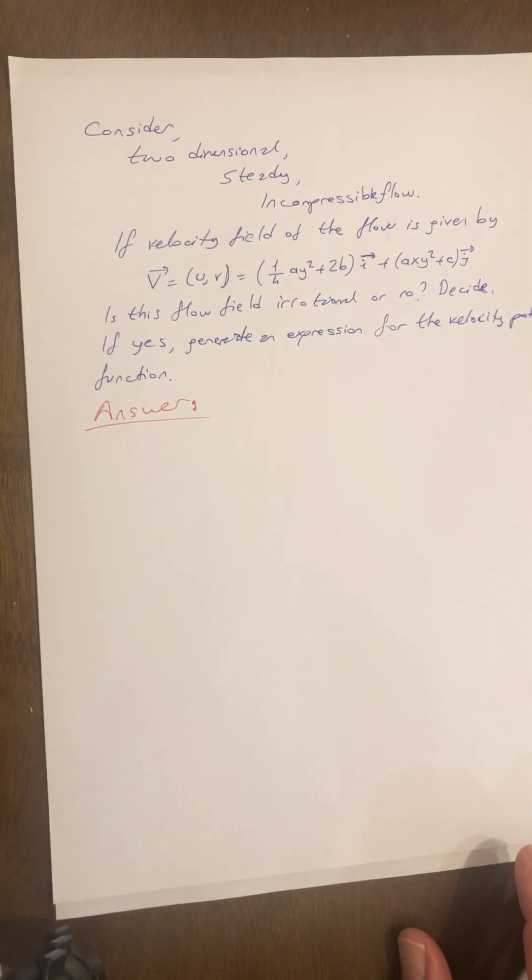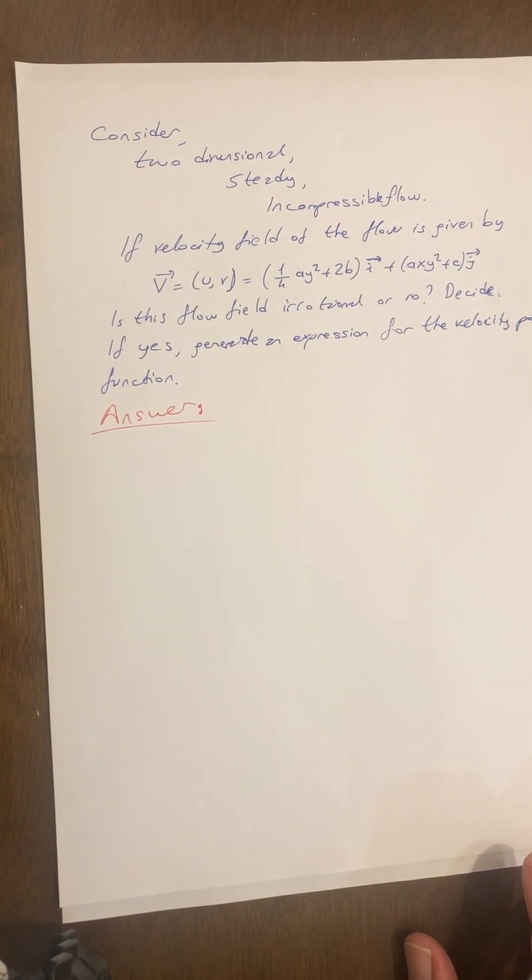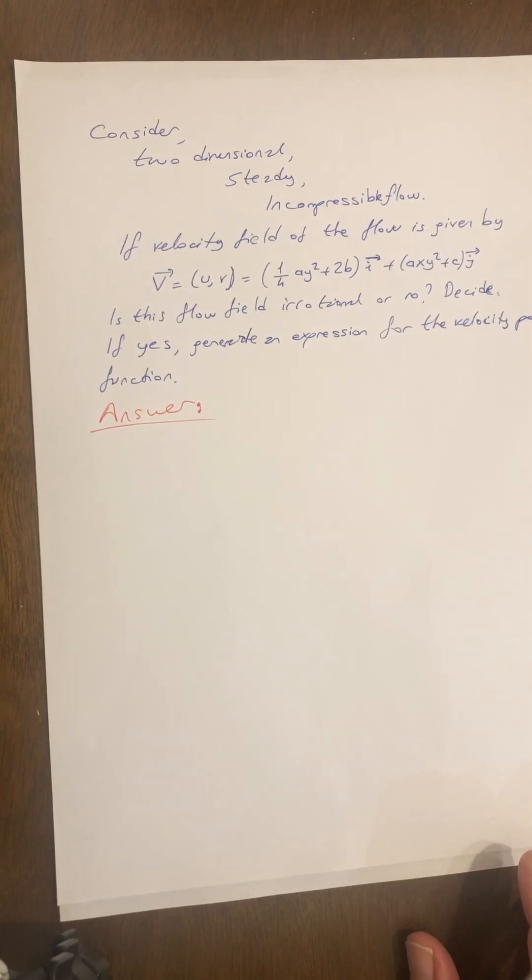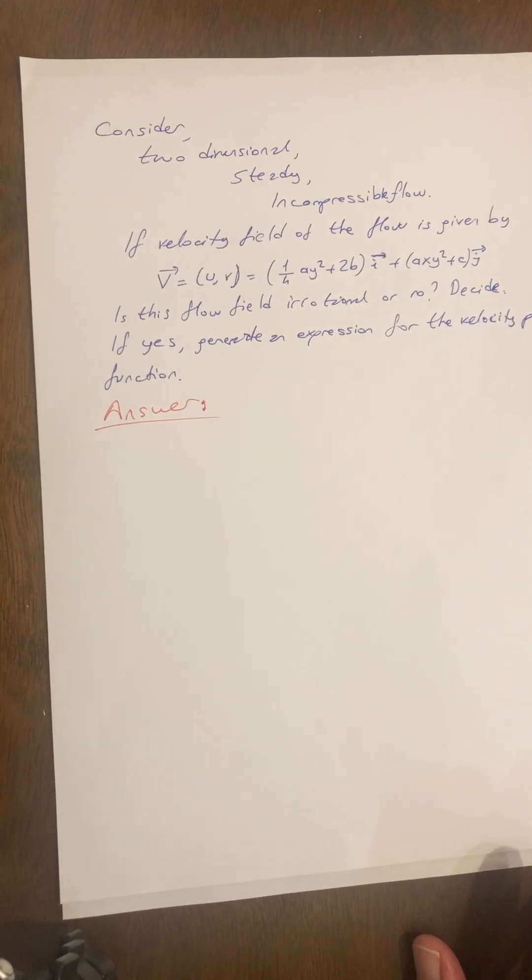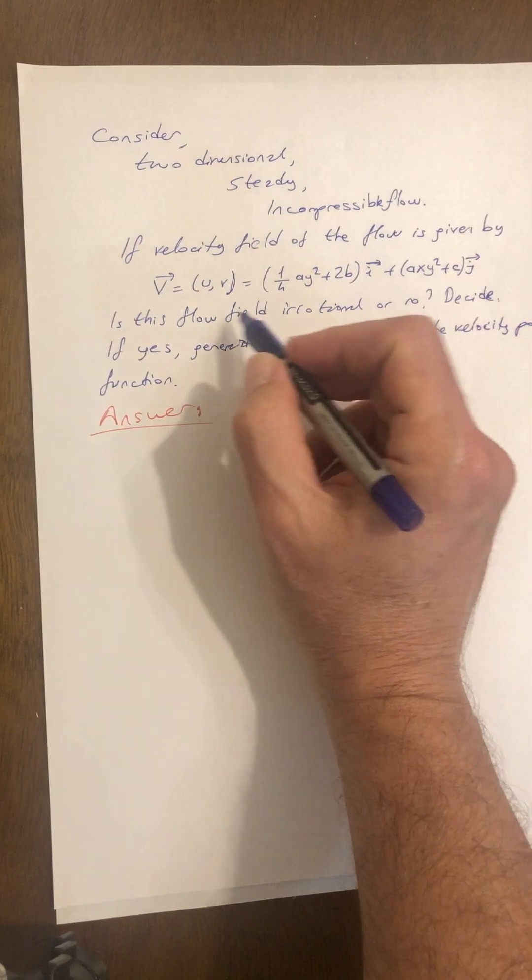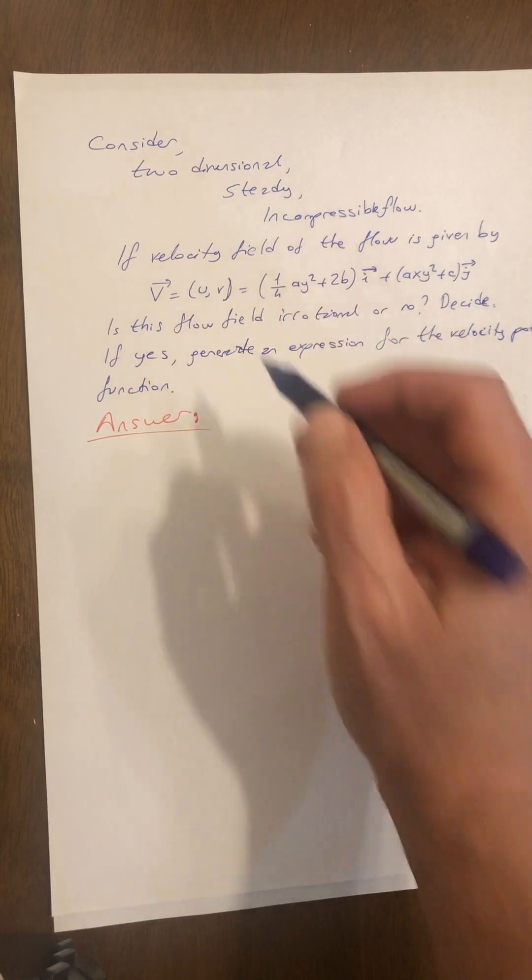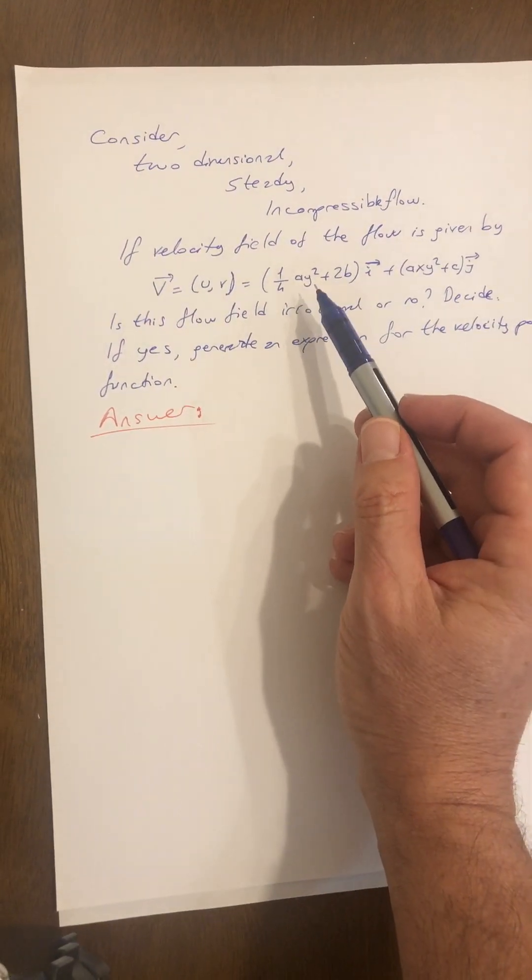In this question we will consider the flow as two dimensional, steady, incompressible flow. The question is: if velocity field of the flow is given by vector V, which is two dimensional, u and v, so it's equal to 1 by 4 ay squared plus 2b i,